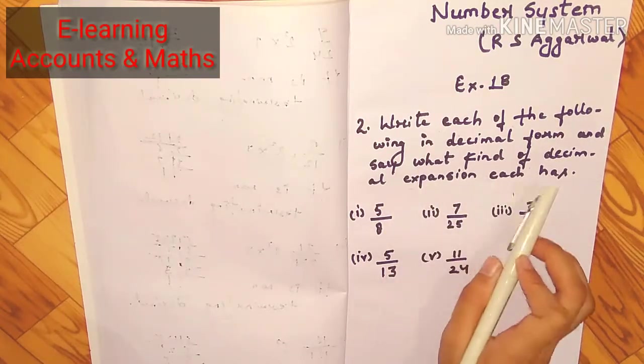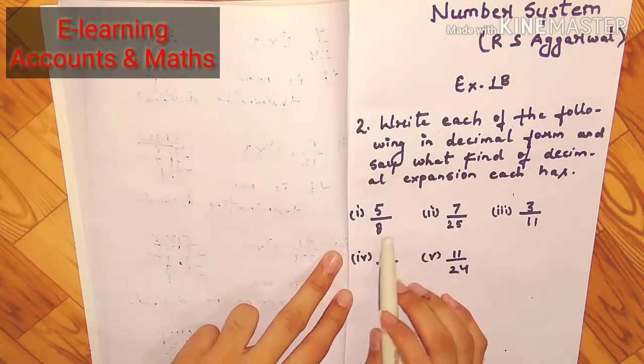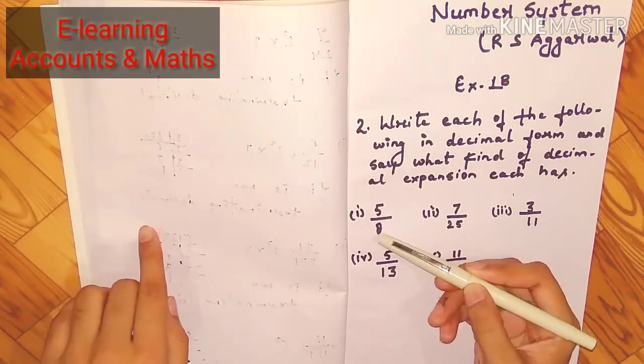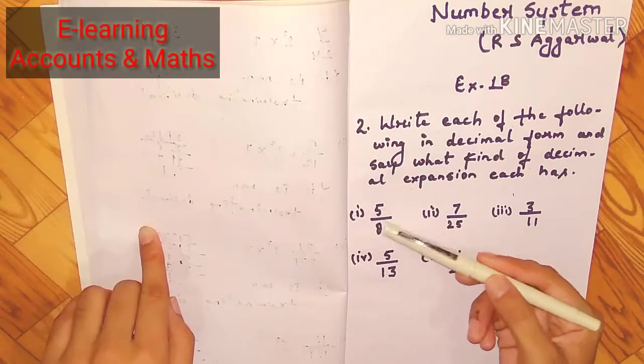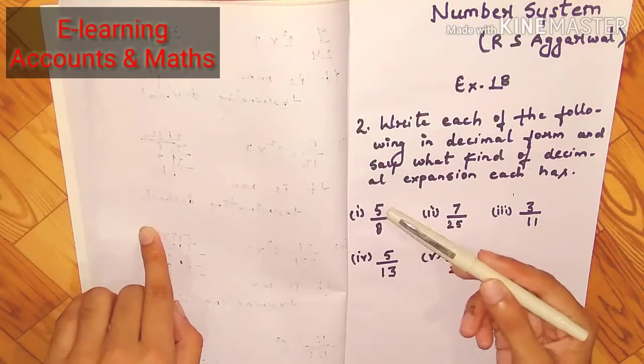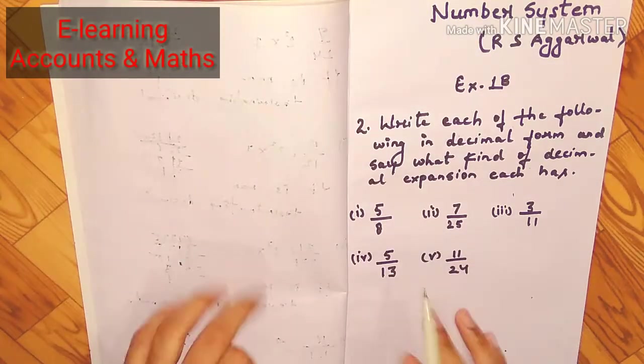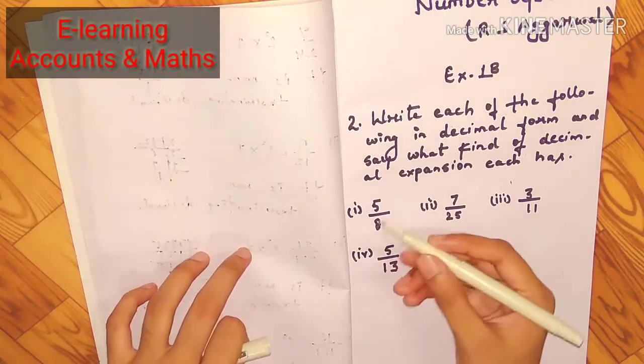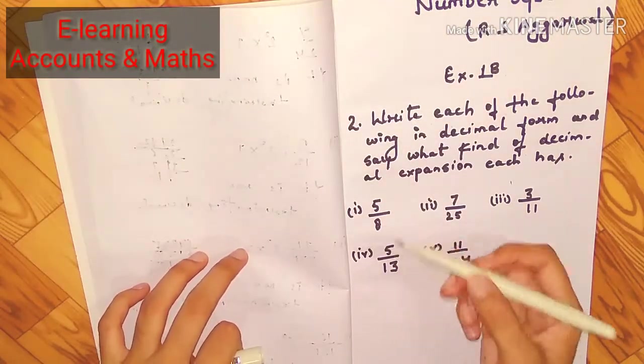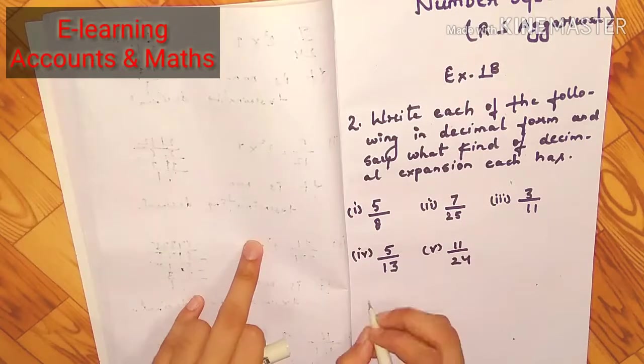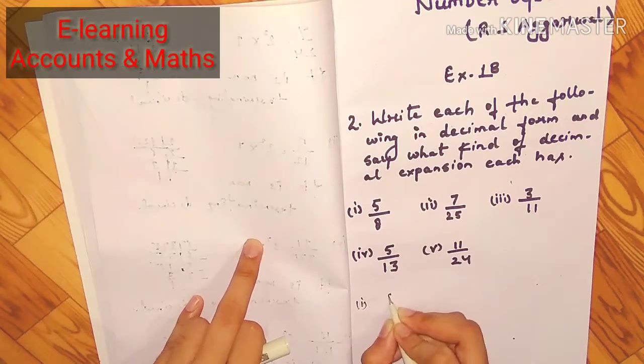We can have five by eight, then we can have fraction five by eight. This one decimal convert we can do it by divide, divide it by five by eight.